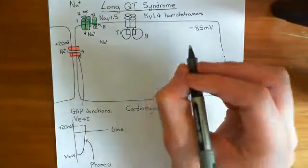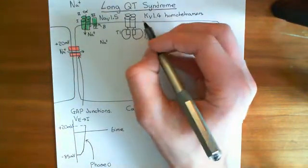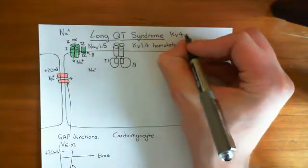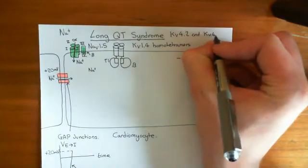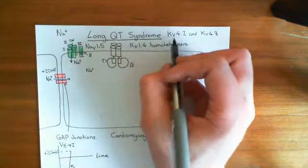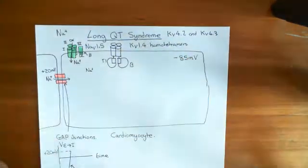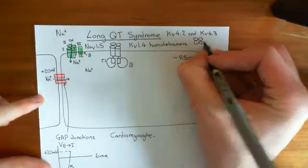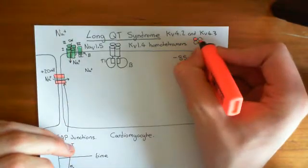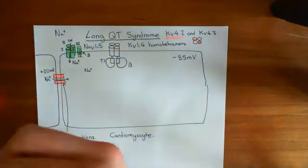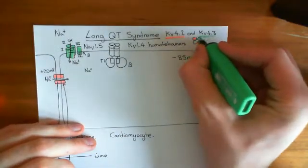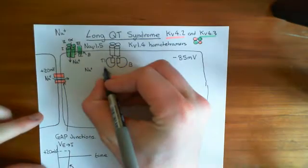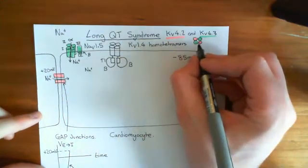Another type of voltage-gated potassium channel important at this stage is a heterotetramer of KV4.2 and KV4.3. That means two of the subunits will be of the KV4.2 type and the other two will be KV4.3. When viewed from the top, the two KV4.2 subunits are diagonally opposite each other, and the two KV4.3 alpha subunits make up the remainder of this pore-forming unit. Beta subunits can also be bound to the tetramerization domains on the cytosolic sides of each of these proteins.